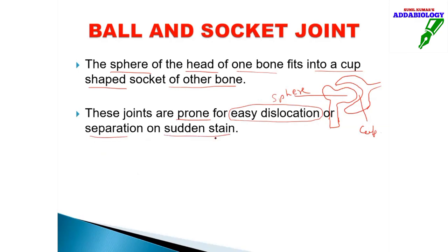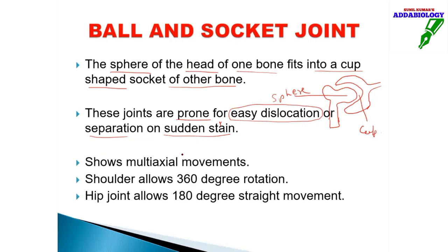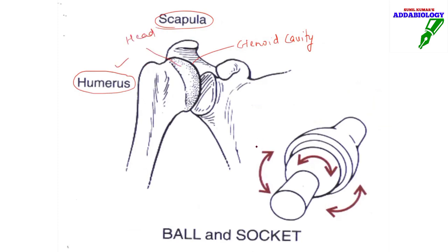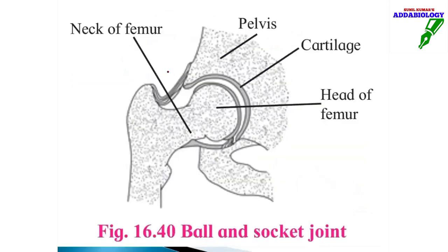Ball and socket joints show multi-axial movement. The hip joint shows 180-degree movement — you can move your leg only 180 degrees in a straight direction. The shoulder shows 360-degree movement, as in bowling. The first example is between the humerus and the glenoid cavity of the scapula — this cavity is occupied by the head of the humerus, forming a joint that moves 360 degrees.